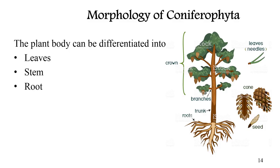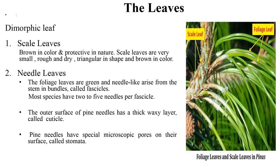Now we will discuss the morphology of conifers. The plant body can be differentiated into leaves, stem, and roots. Conifers have two types of leaves: scale leaves and needle leaves. Scale leaves are brown in color, protective in nature, very small, rough and dry, triangular in shape. Needle leaves, or foliage leaves, are green and needle-like, and arise from the stem in the form of bundles called fascicles. Some species have two to five needles per fascicle. The outer surface of pine needles is covered with a waxy layer of cuticle and stomata.